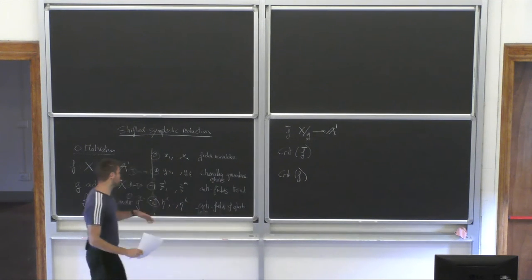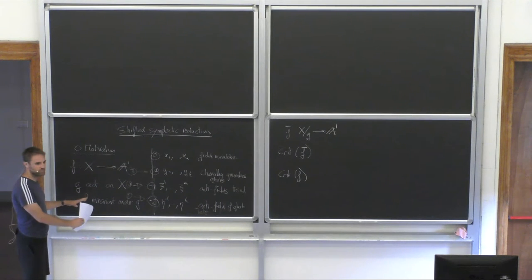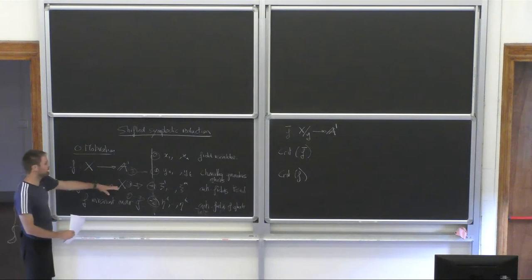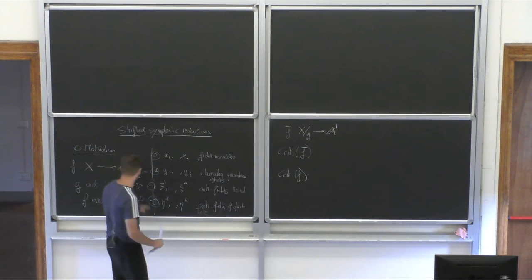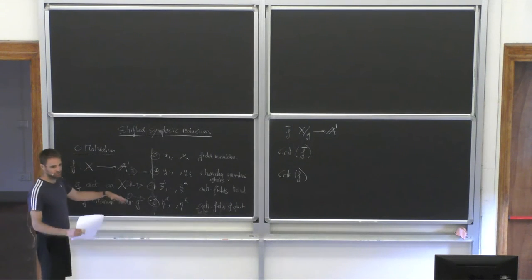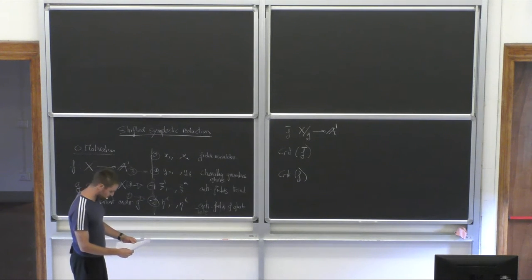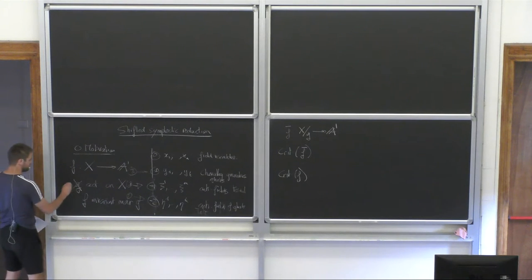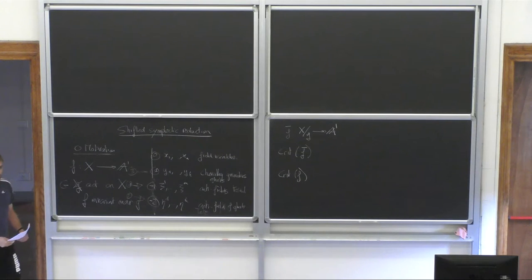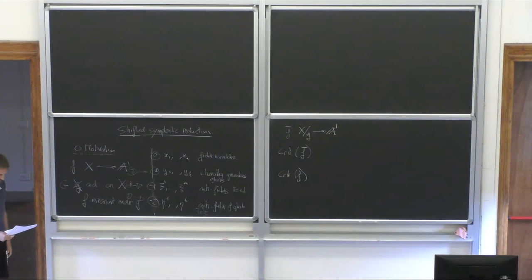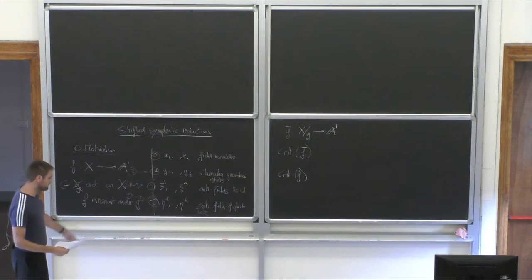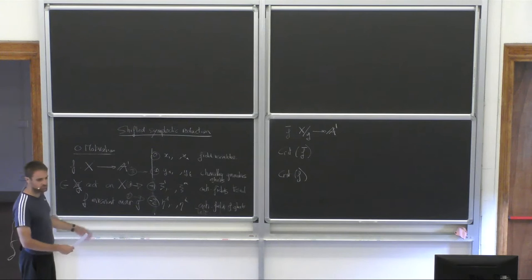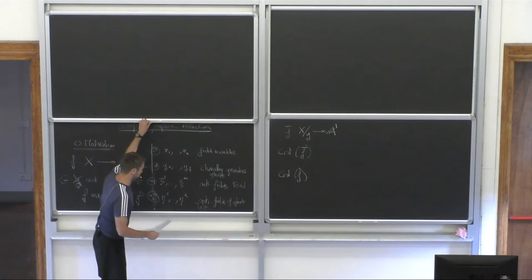The upshot of the whole talk is that the first guy is a symplectic reduction of the second guy. The main content of the talk will be to show you that these two ways of computing the same thing are exactly equivalent. This works in the case when you have an algebra of symmetries acting on all of X. Also, I want to replace little g by a group G — global symmetries instead of infinitesimal symmetries — which will be an excuse to introduce some shifted symplectic stuff.